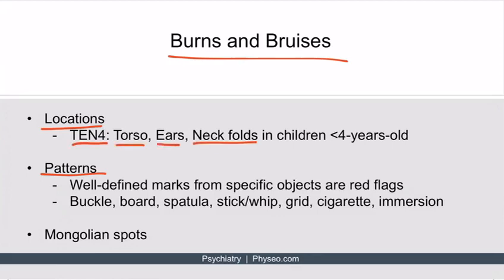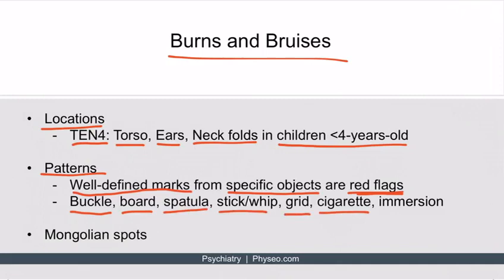For patterns, you're looking for well-defined marks from a specific object, which is a red flag for abuse. Examples include the pattern of a buckle, a board, a spatula, a stick or whip, a grid, a cigarette butt, and an immersion pattern. The immersion pattern refers to being immersed in scalding water, as though the child was forcibly placed in a very hot bath.